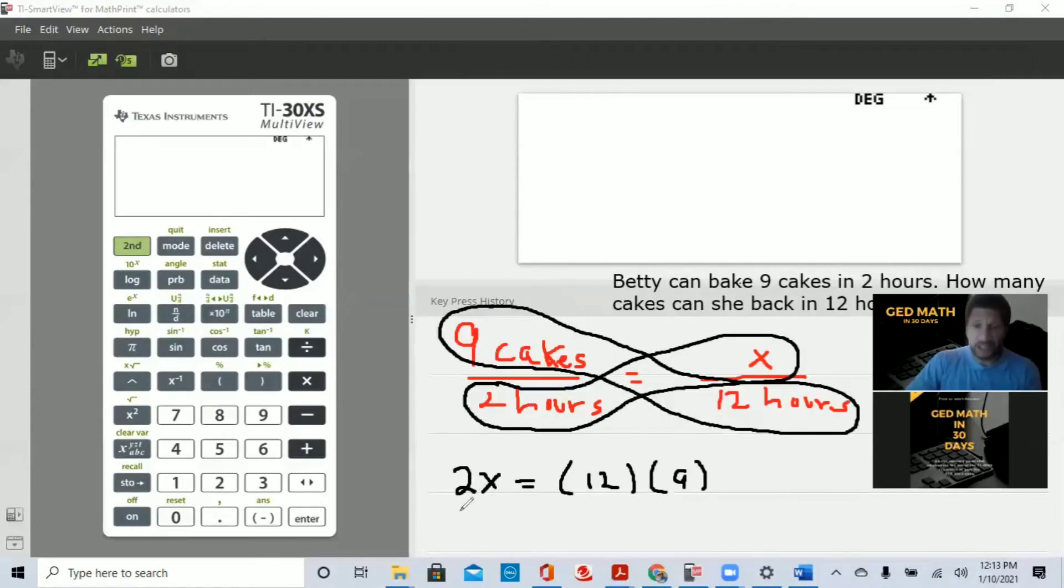In order to get the x by itself, the opposite of multiplication is division. So we want to divide both sides by 2. The 2s cancel. We get x equal 108 divided by 2. Again, we want to use mental math. So 9 times 10 is 90. 9 times 2 is 18. 90 plus 18 gives you 108. So we want to do as much mental math as we can. So 90 plus 18 is 108. 108 divided by 2 is 54.